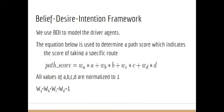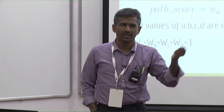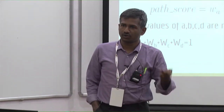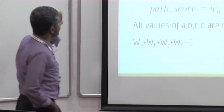We use the BDI architecture to model the agents and human behavior. Instead of just being compliant with police instructions, agents can use their own decision-making framework to deviate. BDI stands for Belief-Desire-Intention: belief is what the agent knows about the world, desire is what the agent wants to achieve, and intention is how the agent plans to achieve it. That's the brief overview of the BDI architecture.